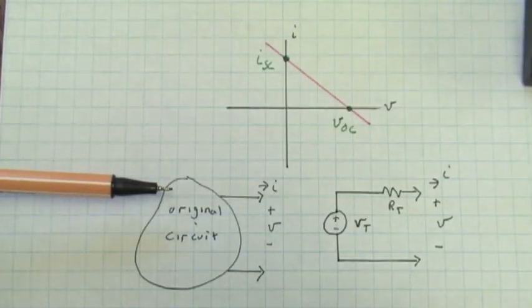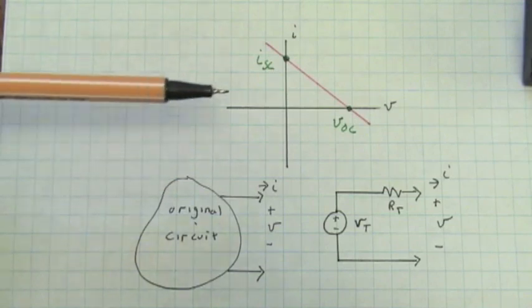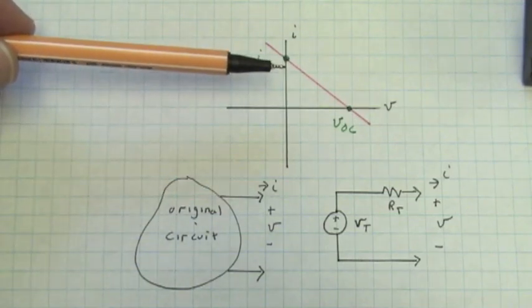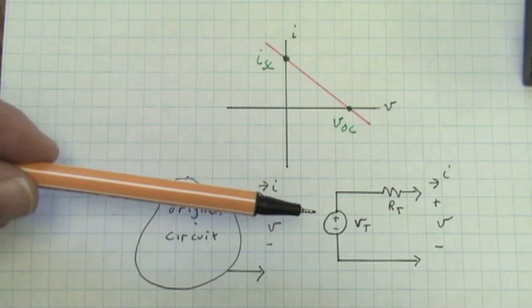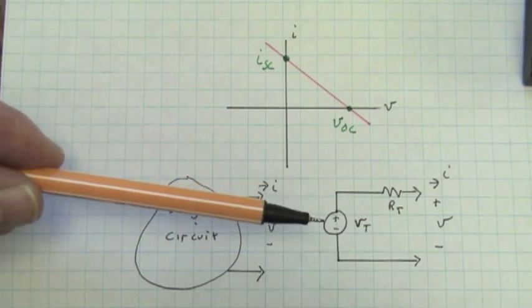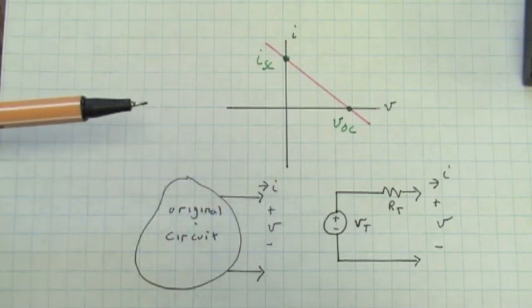Here we have the original circuit. It's a linear circuit. I versus V will have a linear relationship. We wish to find the Thevenin equivalent. This is also a linear circuit. Two points make a line.